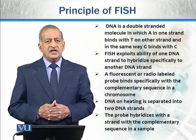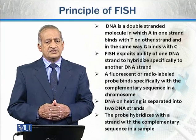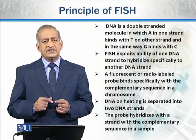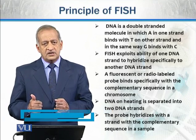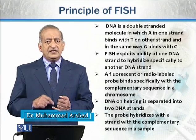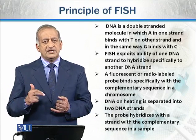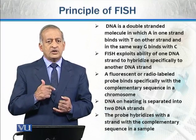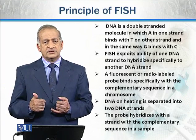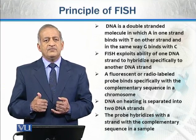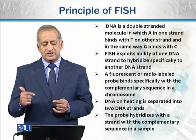First of all, we have to know that DNA is a double-stranded structure composed of two strands. Each strand is attached to the other by hydrogen bonds, such that adenine of one strand is attached with thymine of the other strand by two hydrogen bonds, and guanine present on one strand is attached with cytosine of the other strand by three hydrogen bonds. So these two strands of DNA are attached through hydrogen bonds: adenine with thymine and guanine with cytosine.